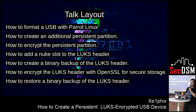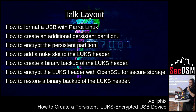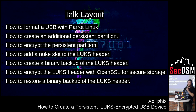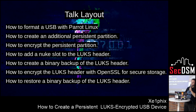Basically, you create a password for the persistent partition, then you create a second password, and if anyone forces you to put in your password against your will, you're able to execute the kill slot and the data is completely null and void. But you can also make a binary backup of the headers, and that way if you kill it and then you want to retrieve it later on, you're able to do that.